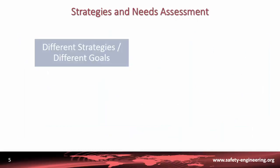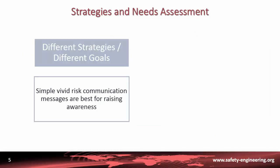Different strategies may vary according to different goals, which means that simple, vivid risk communication messages are best for raising awareness. For example, you should consider the option of a shocking picture if you want to raise awareness. On the other hand, a shocking image is not really the best option if you want to reach an agreement between different parties.